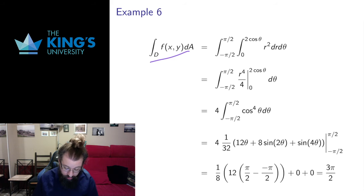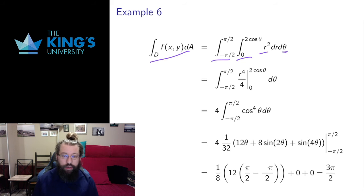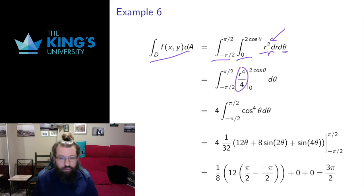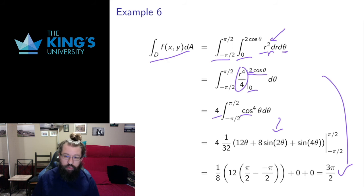Putting it all together: constant theta bounds on the outside, r bounds depending on theta on the inside. The function x squared plus y squared turns into r squared. I actually left a mistake in my slides here — it's easy to forget the Jacobian. The most common mistake is forgetting the Jacobian, so this needs to be r dr d theta, not dr d theta. That means r squared times r gives r cubed, so the antiderivative is r to the 4 over 4. I evaluate the r integral using bounds in theta, getting 2 to the 4 divided by 4 equals 4, times cos to the 4 theta. I used a computer for the antiderivative of cos to the 4, evaluated on the theta bounds, and finished the integral.